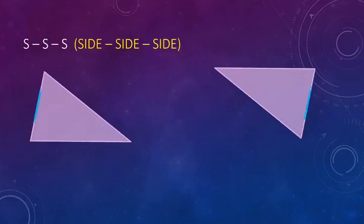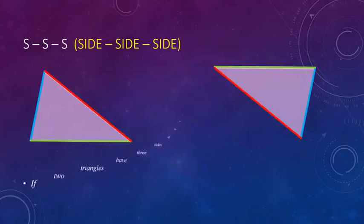The third rule says if all three pairs of sides are equal, then these two triangles are said to be congruent by SSS criteria.